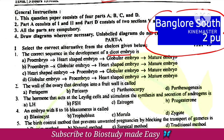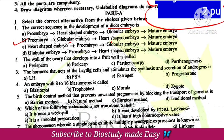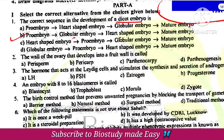The correct sequence of dicot embryo development is option B: pro-embryo, globular, heart-shaped, and mature. The wall of the ovary that develops into the fruit wall is option B: pericarp.